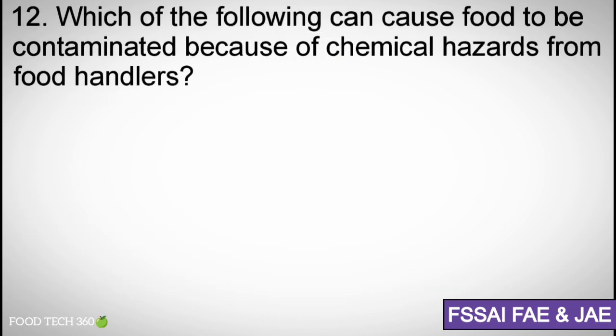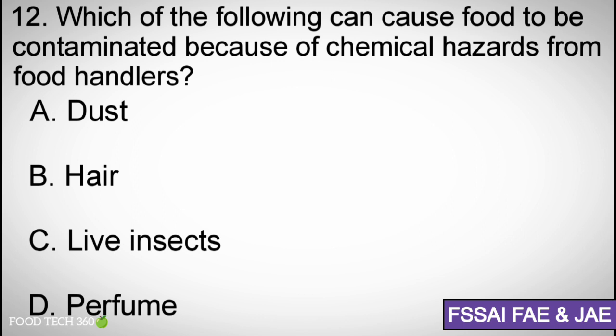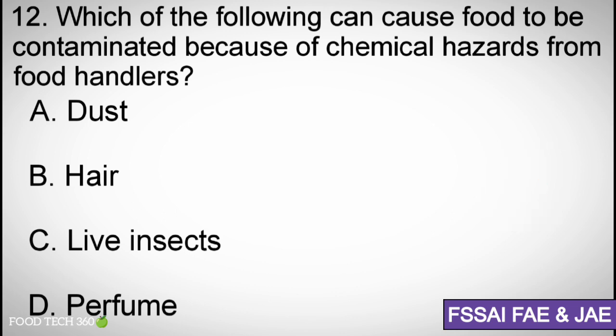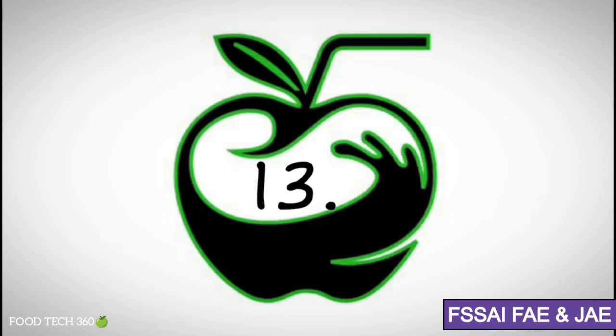Question number 12. Which of the following can cause food to be contaminated because of chemical hazards from food handlers? A. Dust, B. Hair, C. Live insects, D. Perfume. Correct answer: D. Perfume.